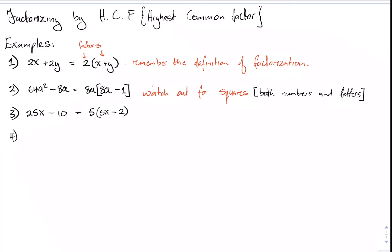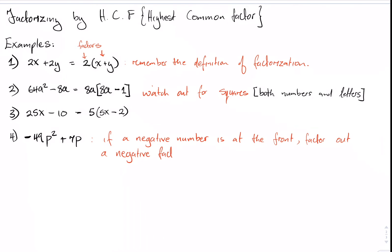Example four: negative 49p squared plus 7p. It's important to recognize that if the expression begins with a negative number, we want to factor out a negative term. We recognize that negative 7p is common in both terms, so factoring out negative 7p gives us: negative 49p squared plus 7p equals negative 7p times 7p minus 1.